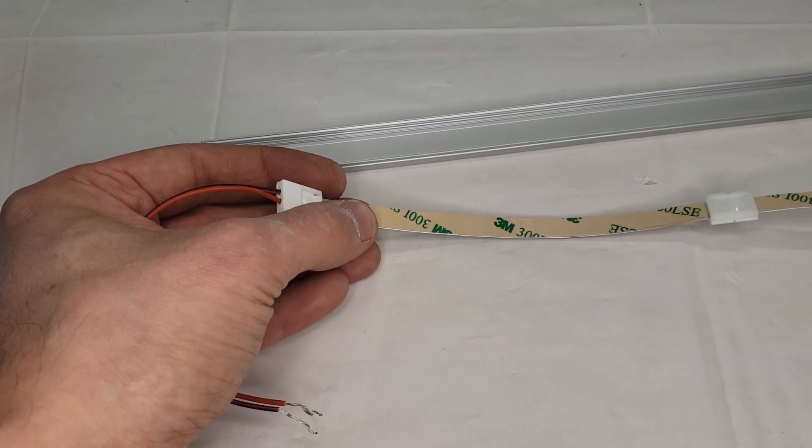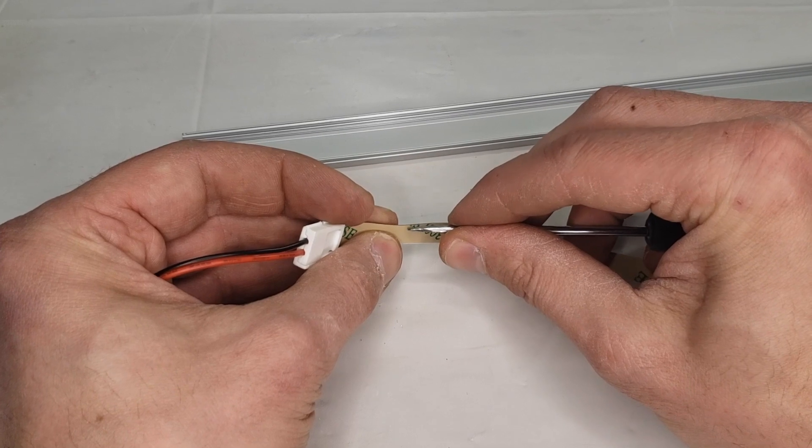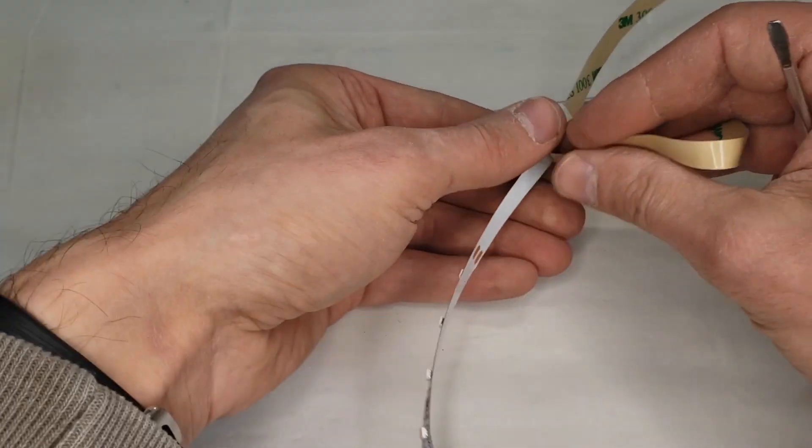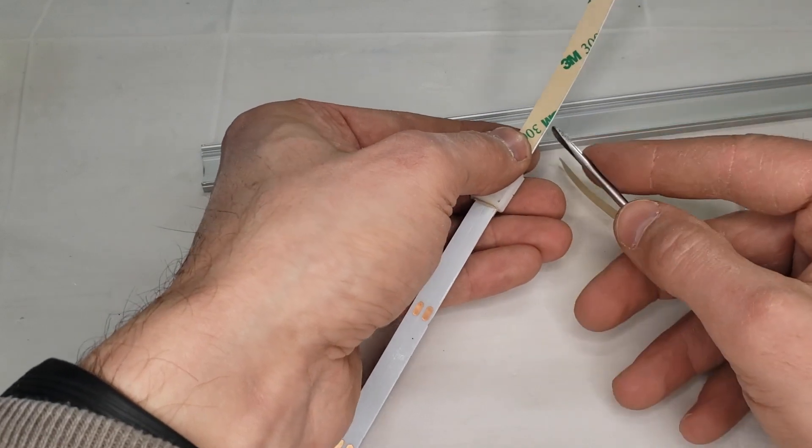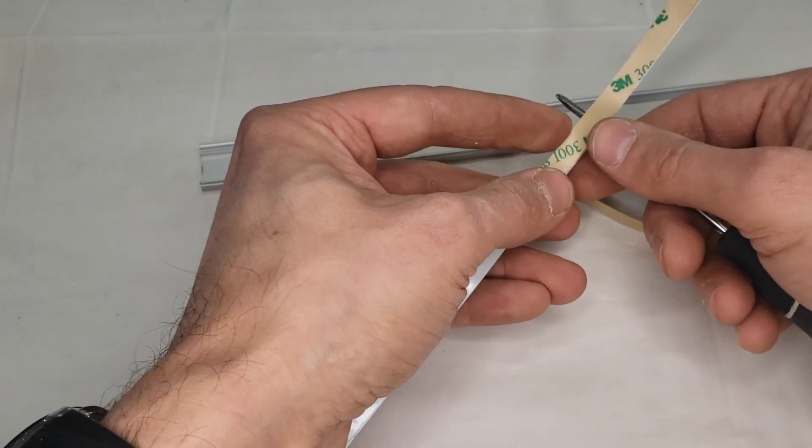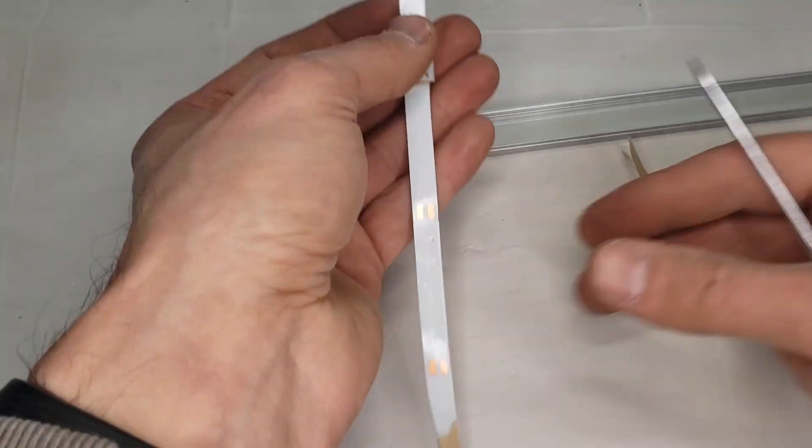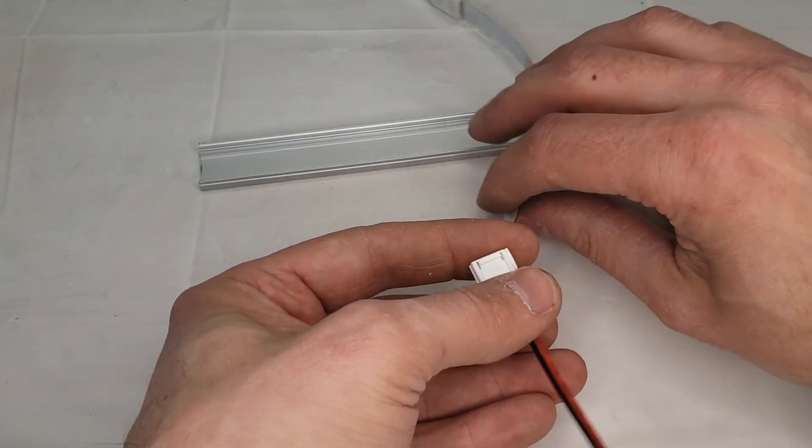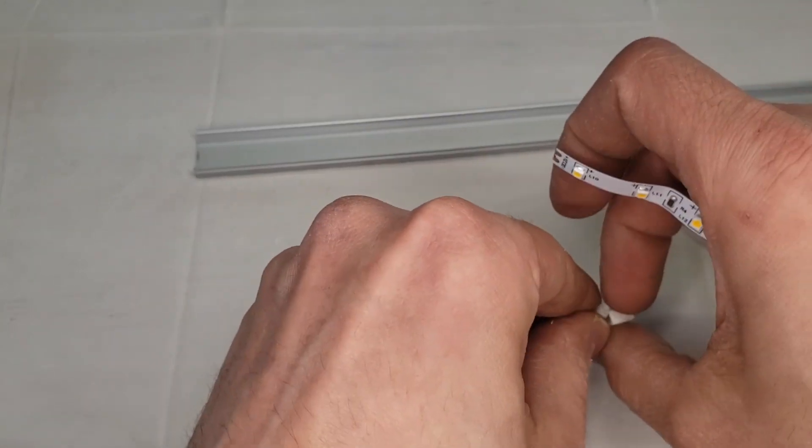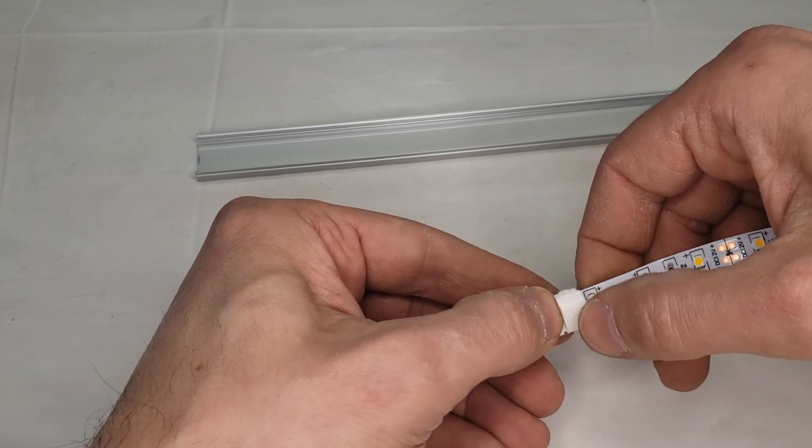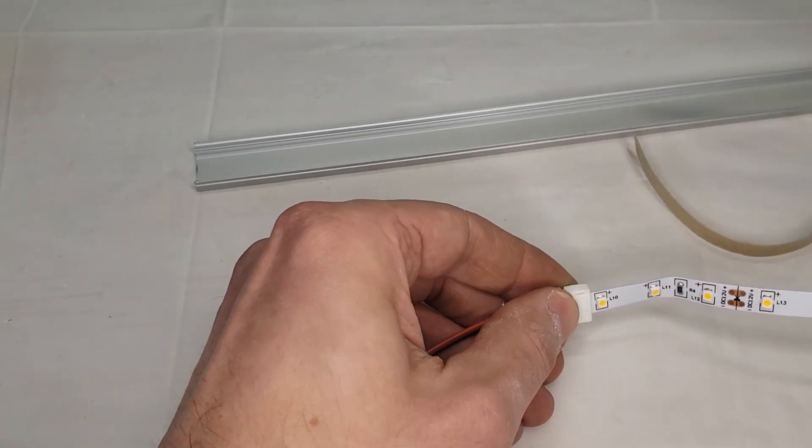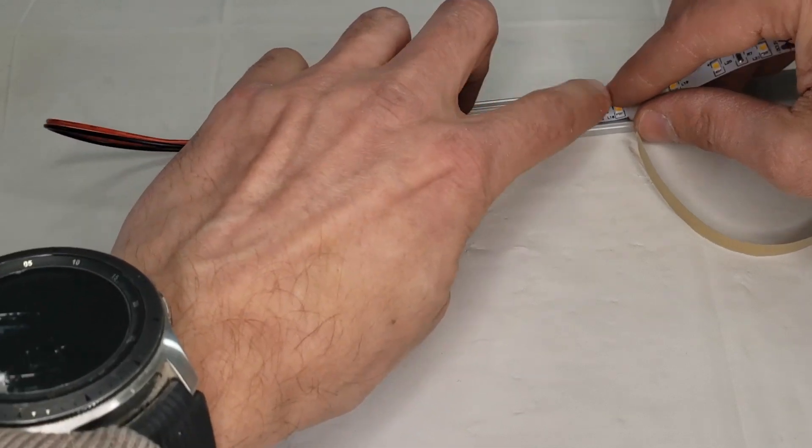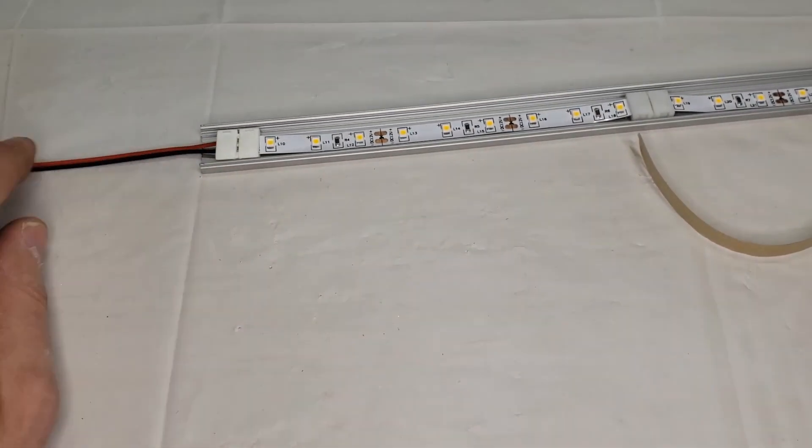I'm just going to peel off the sticky back. Now remember, if you're using a really long piece of tape, you don't want to peel everything all at once. We'll just tape it in here.